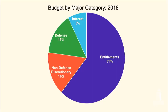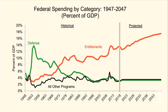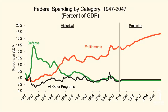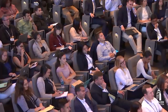Entitlements at $2.8 trillion are about 60% of the budget today. A chart breaks spending into three categories: entitlements in orange, defense in green, and all other programs in black. The orange entitlement line rises steadily throughout the 1950s, 60s, 70s, 80s, all the way through to today. This growth occurs regardless of whether there's a Republican or Democrat in the White House, or which party controls Congress.